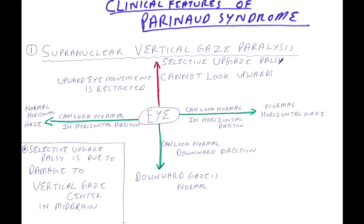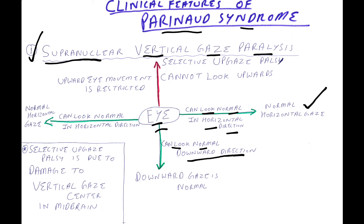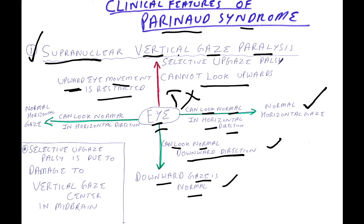Clinical feature number one is supranuclear vertical gaze paralysis. The eye can look normally in the horizontal direction — normal horizontal gaze. Downward gaze is also normal. However, the eye cannot look upwards, as upward eye movement is restricted. This is called selective upgaze palsy, due to damage to the vertical gaze center in the midbrain.